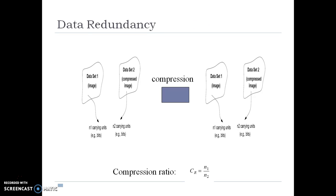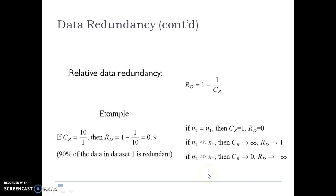Data redundancy: Dataset 1 is the original image represented with N1 number of bits. Dataset 2 is the compressed image with N2 bits. The compression ratio CR is calculated as CR = N1/N2. The relative data redundancy RD is equal to 1 - 1/CR, where CR is the compression ratio.